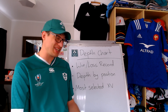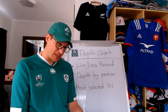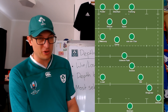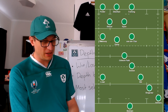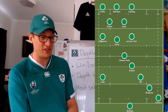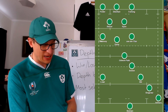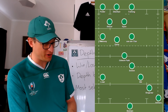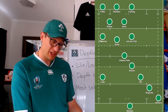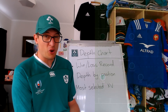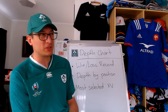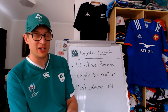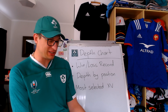Overall, Andy Farrell is very much the consistency coach and the numbers back that up. The most selected fifteen is Porter, Sheehan, and Furlong in the front row; Beirne and Ryan in the second row; Armani, Van der Flier, and Doris in the back row; then Gibson Park, Sexton, Aki, Ringrose, Lowe, Hanson, and Keenan. Most fans could probably name that team - those guys have featured so much. It's a pretty good-looking team heading into a World Cup, with an average age of around 28 to 29 - a decent mix for Ireland in 2022.